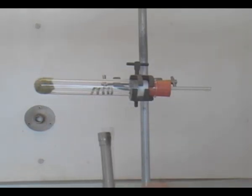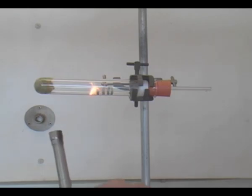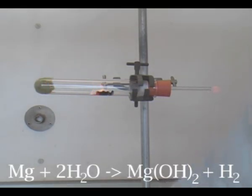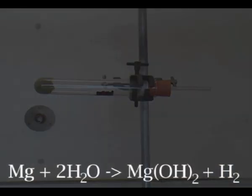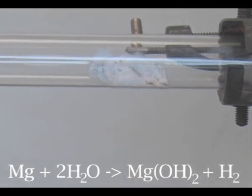The next metal down is magnesium. Magnesium reacts very slowly with cold water, but does react with steam, which we can see here. It forms a gas, hydrogen, which can be easily lit, and also the white powder, magnesium hydroxide, which can be seen here.